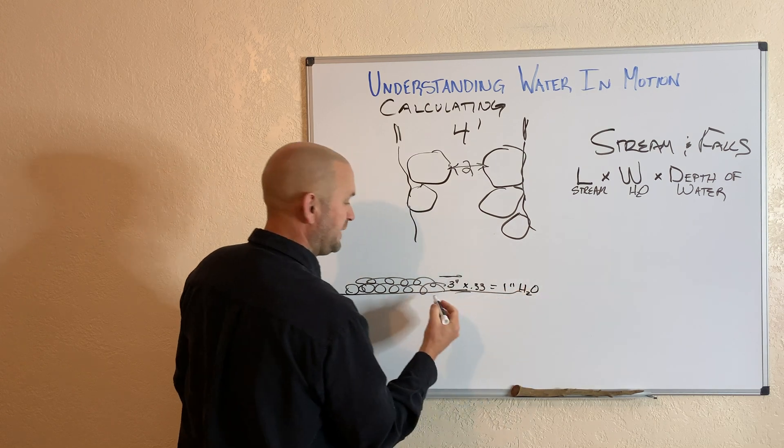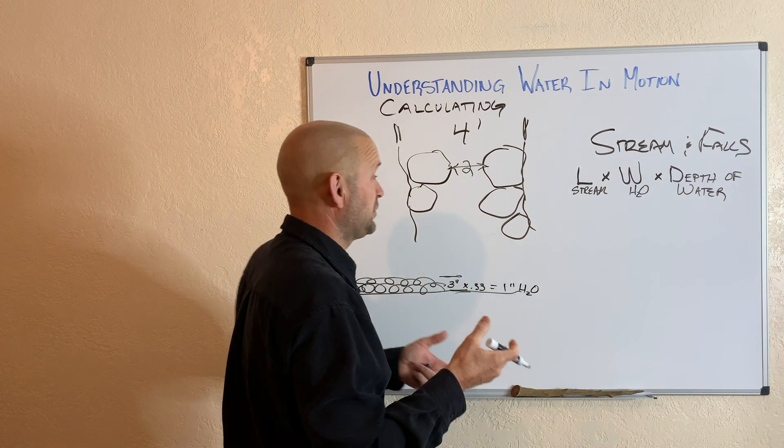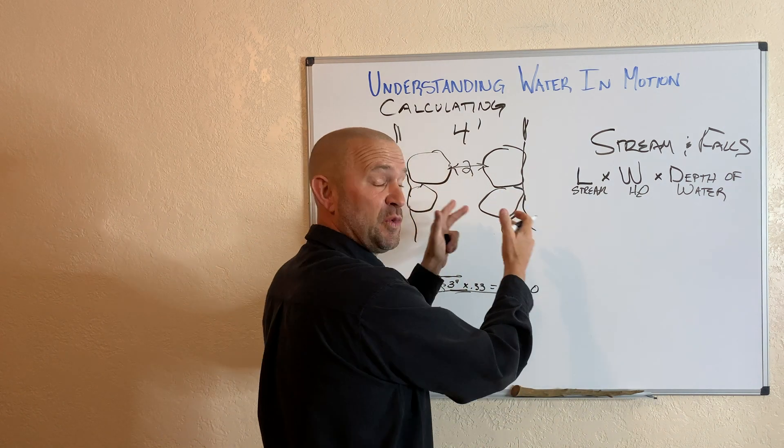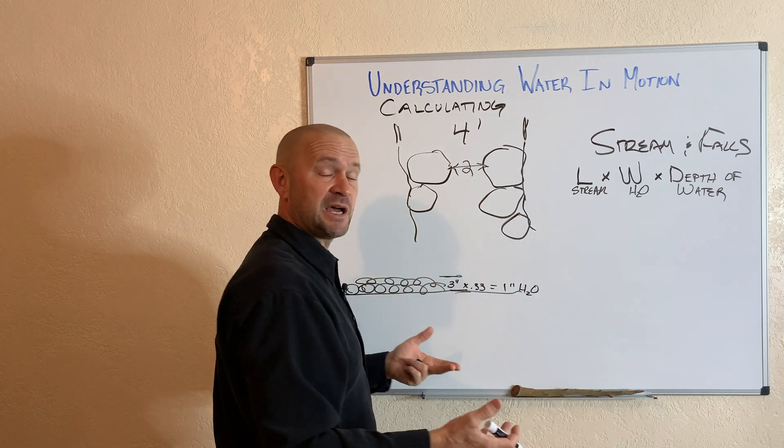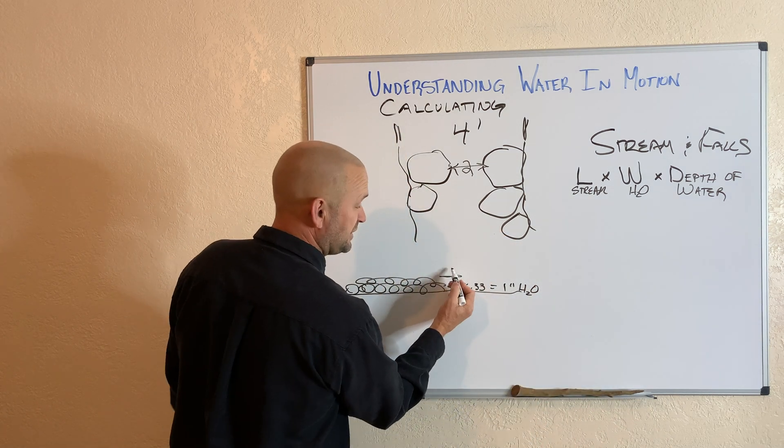And then based on your pump, how thick the water is. If you put a ton of water through a two foot wide stream, maybe your water is two inches thick. If you put a normal size pump, your water on top of that's going to be one inch thick.